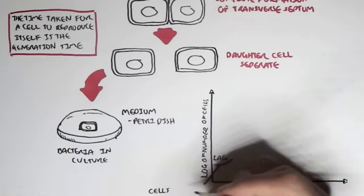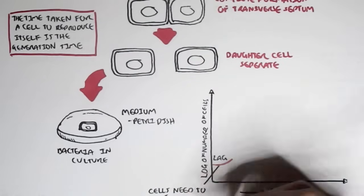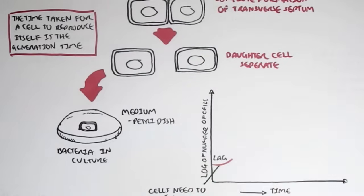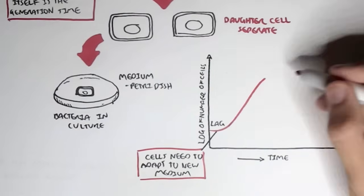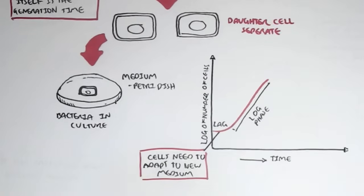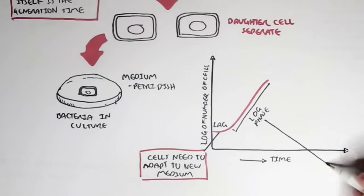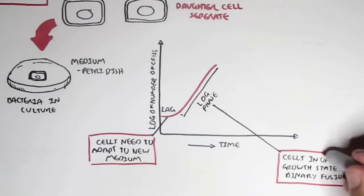The first phase is known as the lag phase, and in this phase, the bacteria need to adapt to the new medium because it was just placed there. After some time, we have the log phase, where cells are in optimum growth state and perform binary fusion reproduction. As you can see, during the log phase, there is a logarithmic increase in cell number.